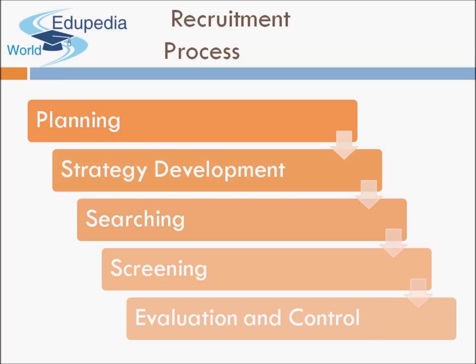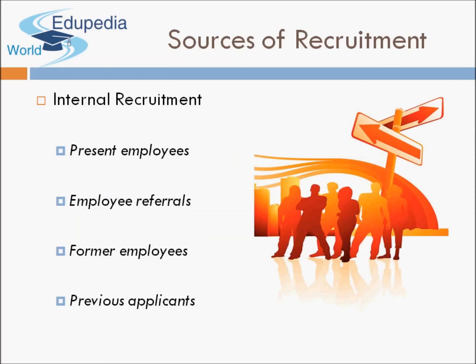Evaluation and control is something done at the end of any process — recruitment, training, selection, performance appraisal. For example, if you chose a consultant, once the consultant has given you resumes, you evaluate whether you chose the right consultant and whether you met your target on time. If there was a gap, you look into how you can control negative factors in the future. So the recruitment process: plan, develop a strategy, search, screen, and finally evaluate and control.